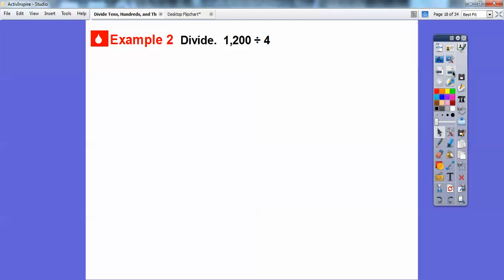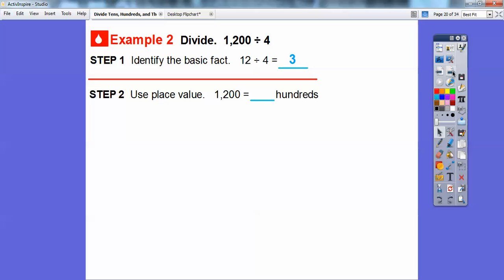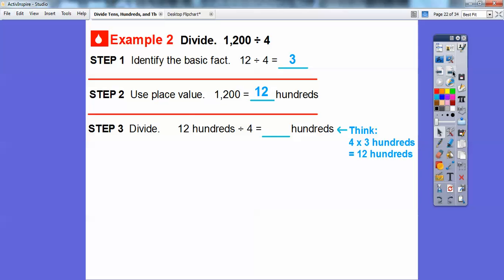Let's try dividing 1,200 divided by 4. Remember 12 divided by 4 is 3. Here's 12 divided by 4, so 1,200 divided by 4 is going to be 300.